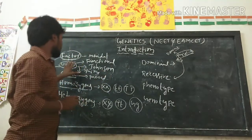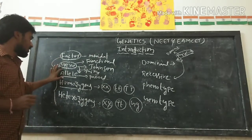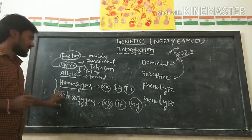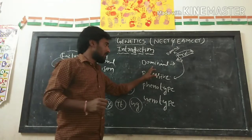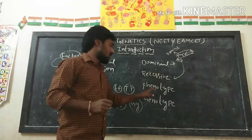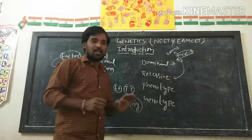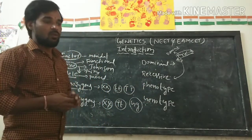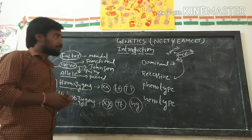These are the terms present only in genetics. Once again: factor, gene, allele, homozygous, heterozygous, dominant, recessive, phenotype, genotype. These factors are present only in genetics.